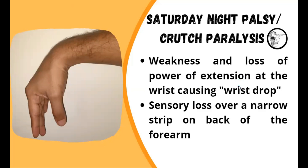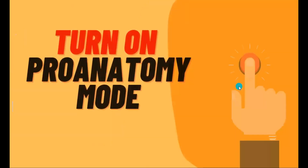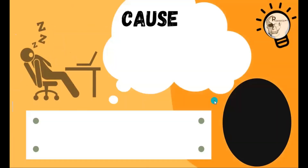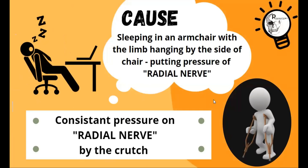Then you have to look for the particular cause. So let's turn the pro-anatomy mode on to identify the causes behind Saturday night palsy. There are two causes which are simple to understand. The first one is sleeping in an armchair with the limbs hanging by the side of the chair, which will eventually put pressure on the radial nerve — the radial nerve is the culprit here. You can see a representation of a person lying back and resting his arm on the side of the chair, causing compression at the site where the radial nerve is crossing, which produces Saturday night palsy.